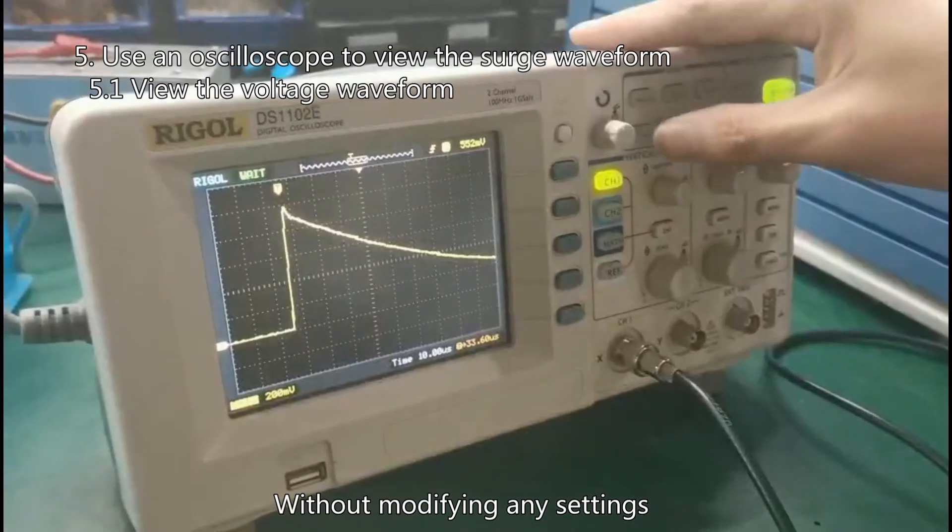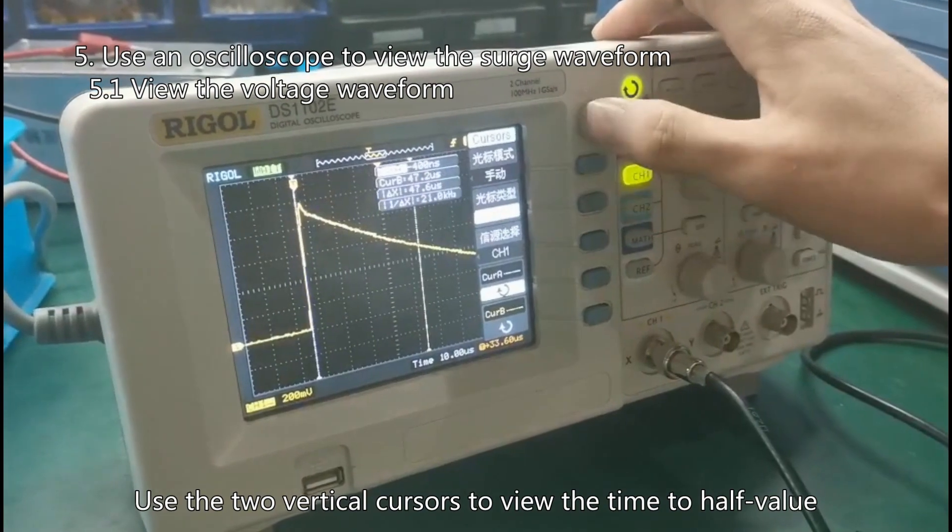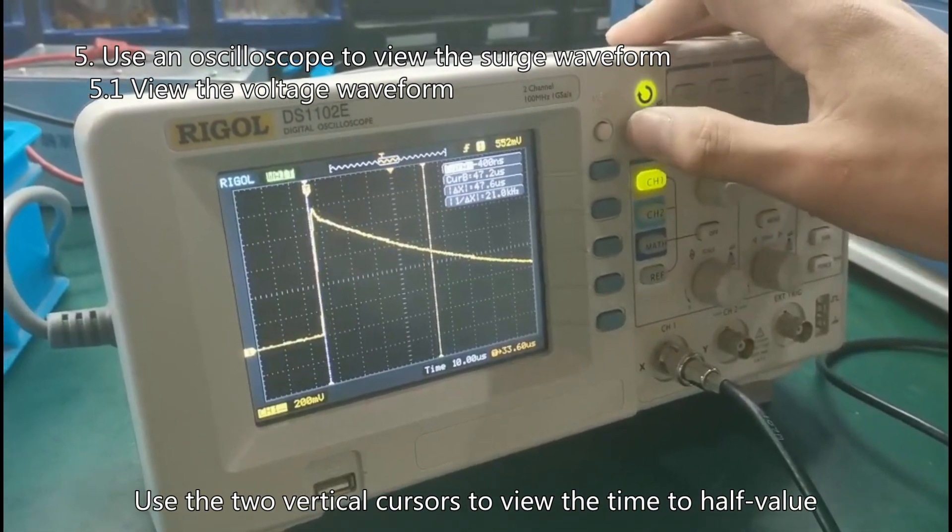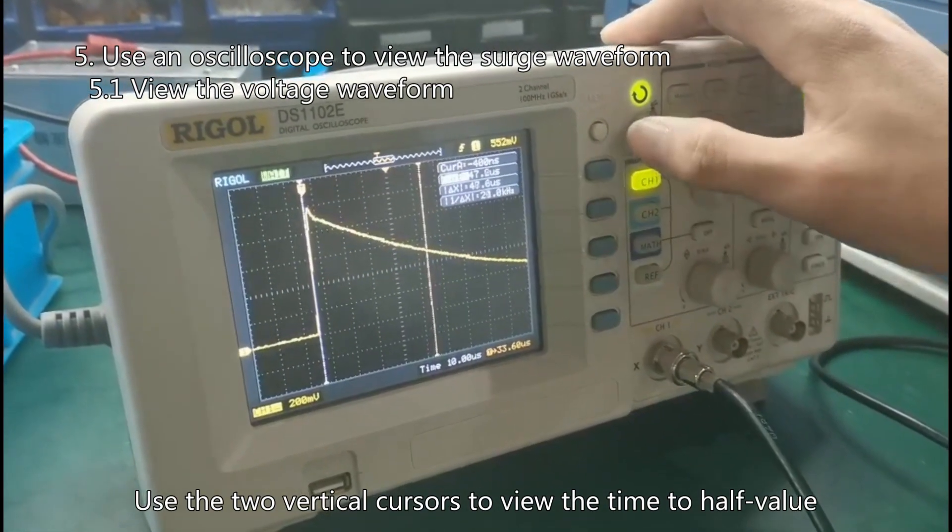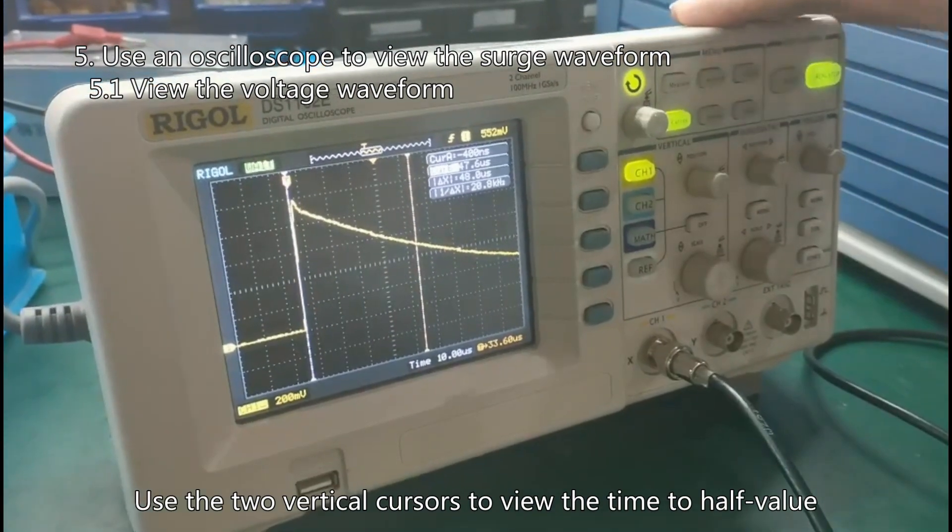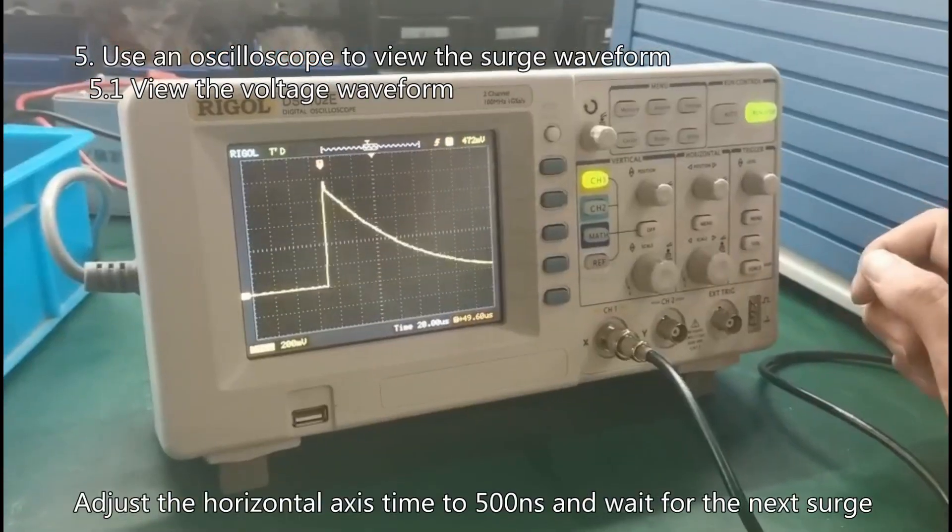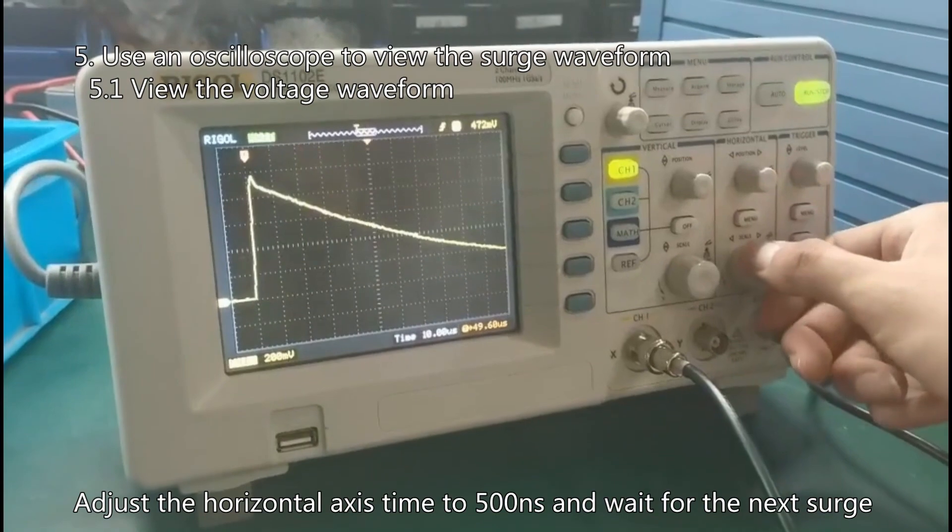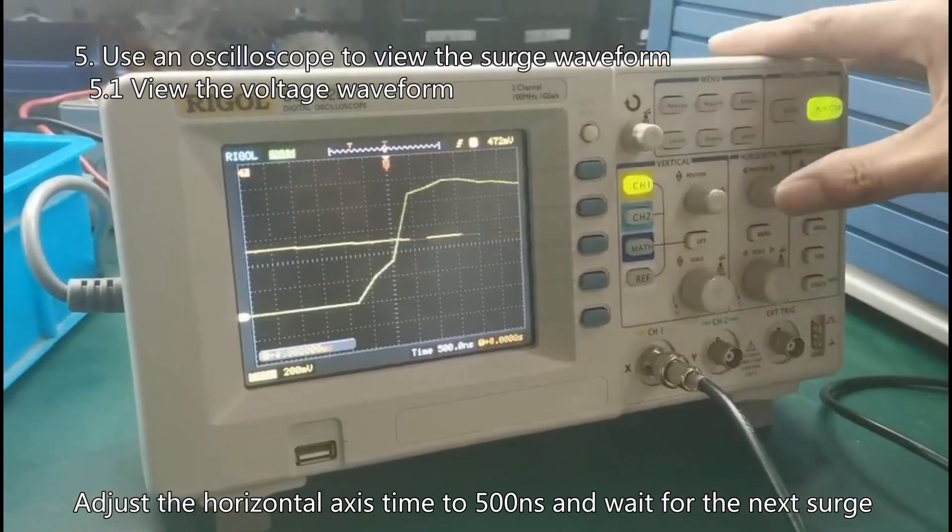Without modifying any settings, use the two vertical cursors to view the time to half value. Adjust the horizontal axis time to 500 nanoseconds and wait for the next surge.